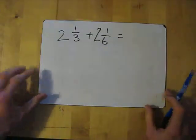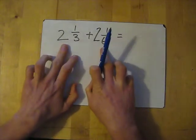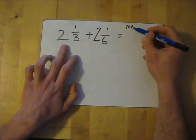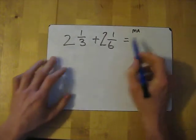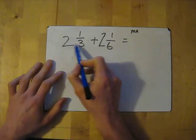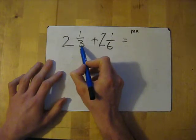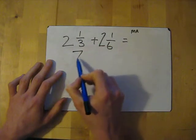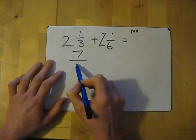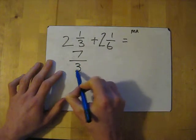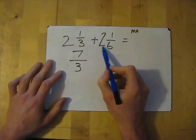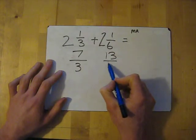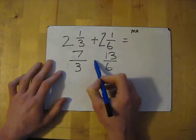Let's try two and a third add two and one sixth. First we need to convert these into improper fractions. We ask MA for help — multiply and add. Multiply the whole number by the denominator: 2 times 3 is 6, then add the numerator, giving us 7. So that's 7 over 3. For the second one: 2 times 6 is 12, add the 1 gives me 13, so it's 13 over 6.